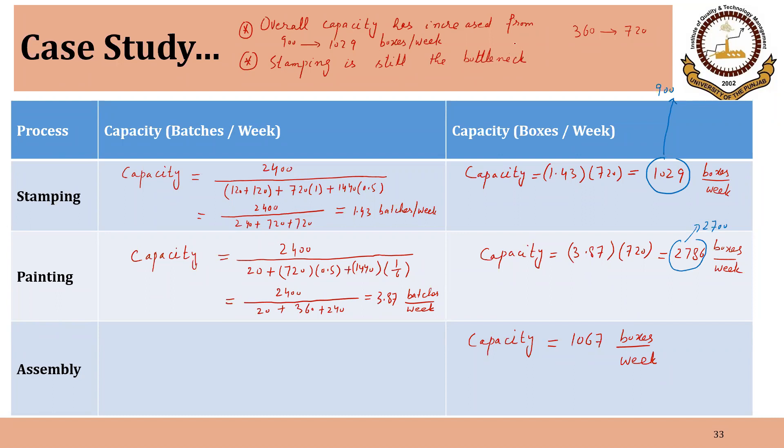Now what could be the other impacts? So capacity has increased, it has not increased linearly, stamping is still the bottleneck. What could be the other impact? The work in process inventory will also increase. You are producing more in the same time, so that will increase the overall inventory in the system. What other impact will be there?